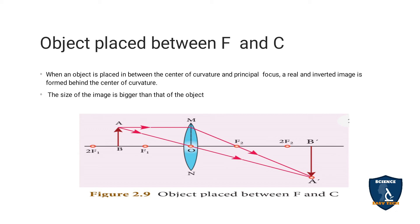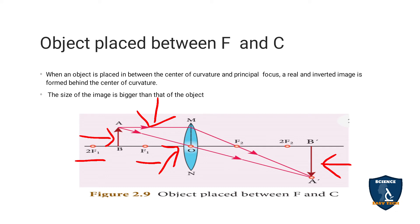Object placed between F and C. The object is kept between the focus point F and the center of curvature C. The two rules are followed — the ray passes through the optic center, and it is parallel to the principal axis. After refraction, you get an inverted image that is larger in size than the object. The image is formed beyond the center of curvature, on the other side of the lens.